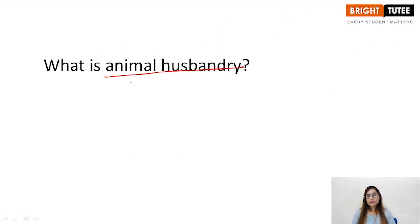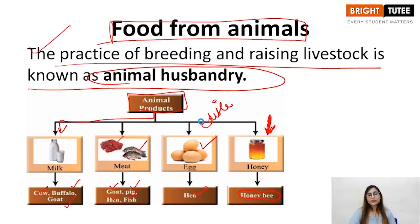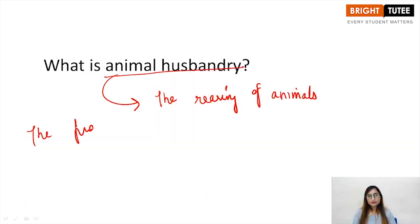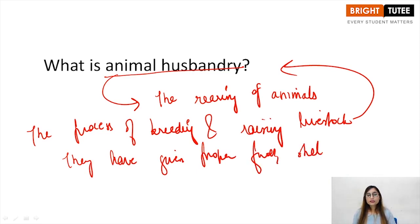What is animal husbandry? Students, as we talked in the lecture, the rearing of animals. We basically have two definitions. Rearing of animals, we can also write the practice of breeding and raising livestock is known as animal husbandry. The process of breeding and raising livestock is known as animal husbandry. They have to be given proper food, shelter and care. This is animal husbandry.